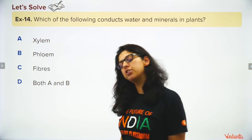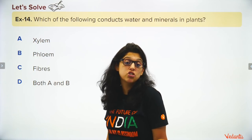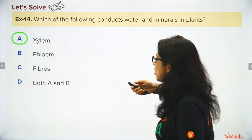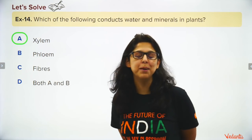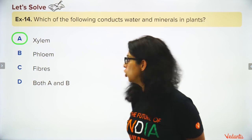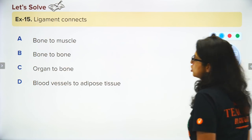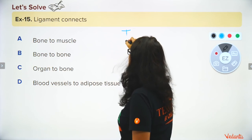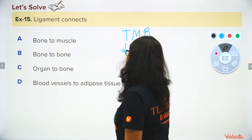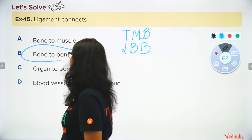Which tissue conducts water and minerals? Fibers and sclerenchyma give strength; phloem translocates food; xylem transports water and minerals. In higher plants, xylem has vessels; in lower plants, it has tracheids. Ligaments connect bone to bone; tendons connect muscle to bone.